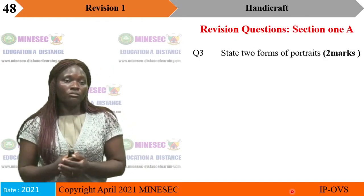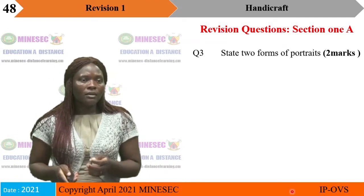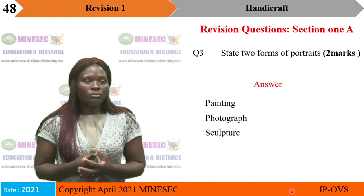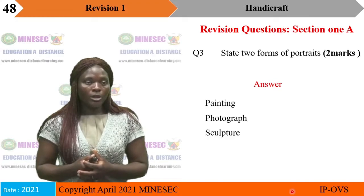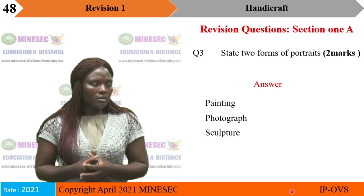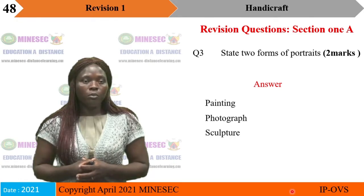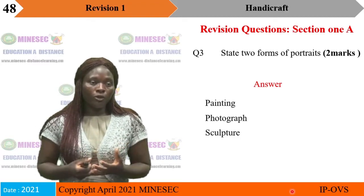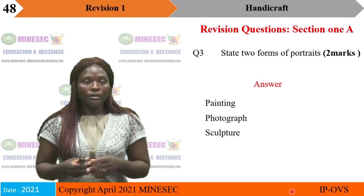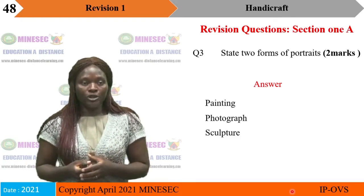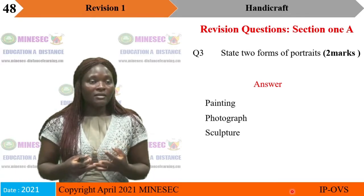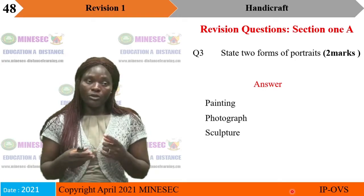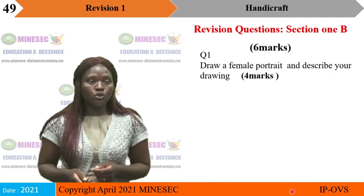Section 1B. Question 3 — state two forms of portrait (2 marks). The forms of portrait are painting, photographs, and sculpture. State any two of these for two marks.